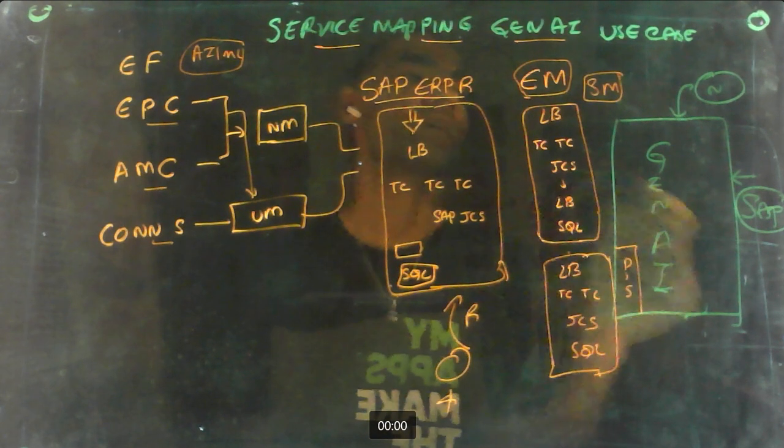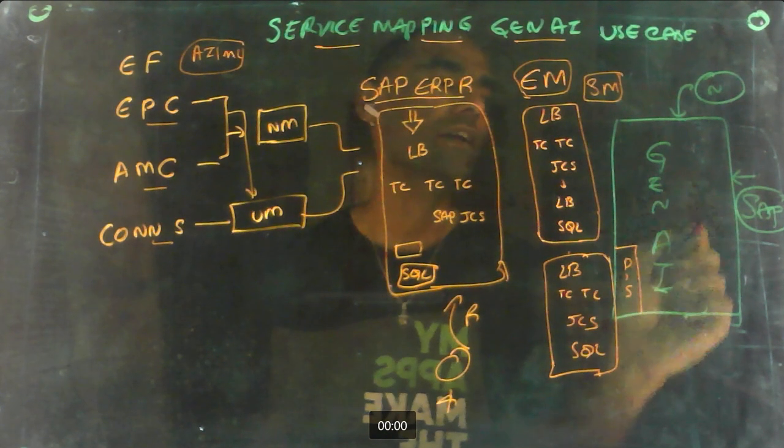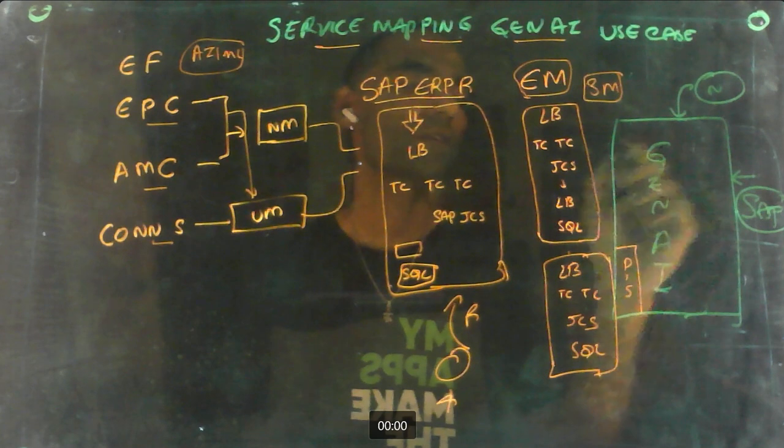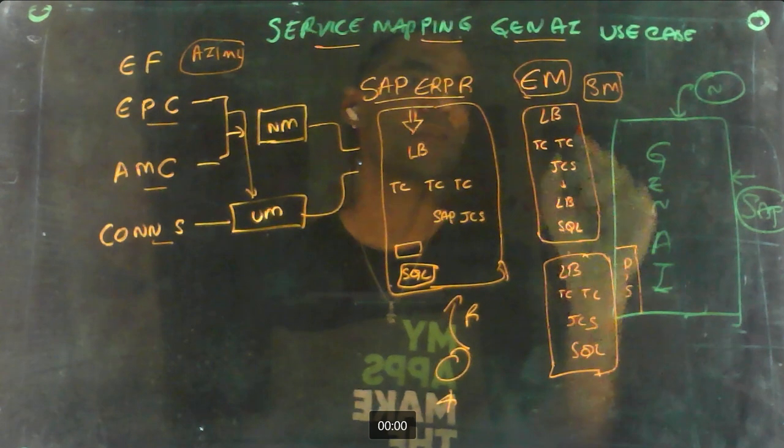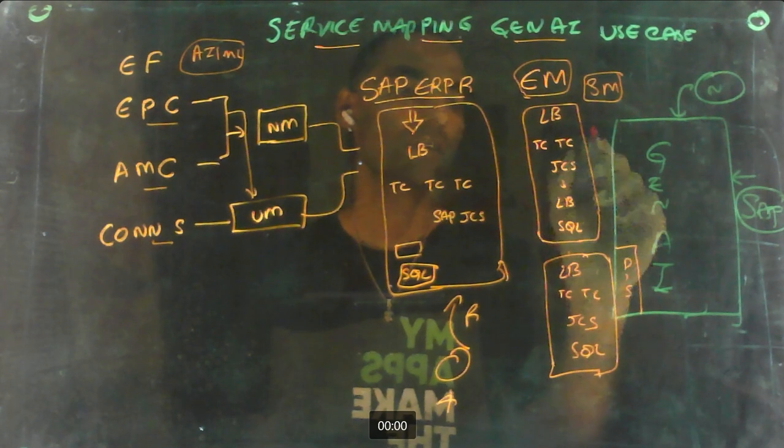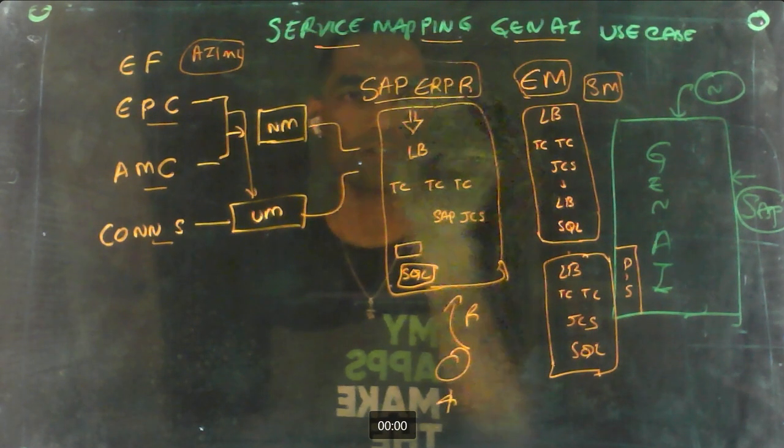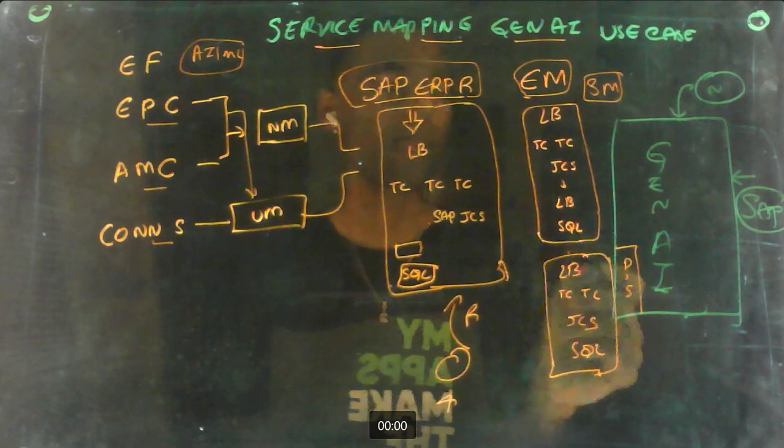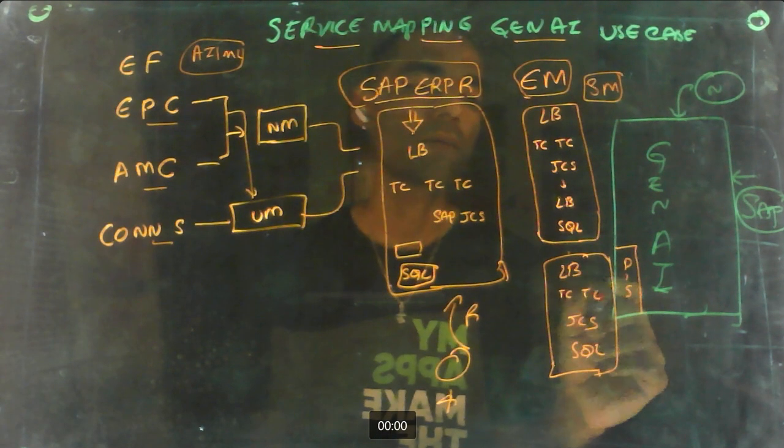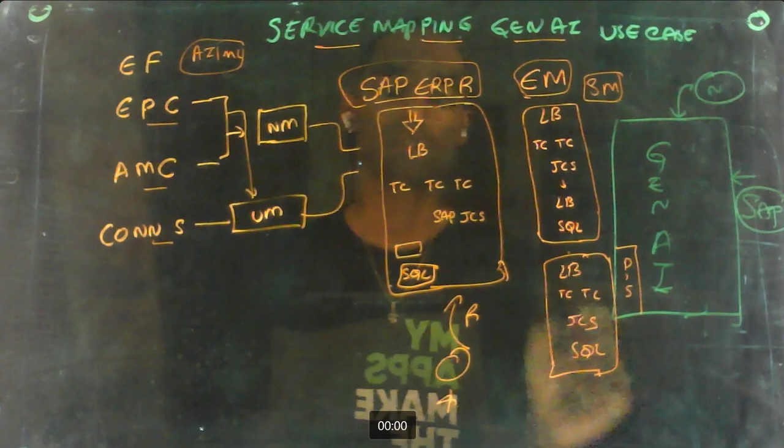But then with the help of Gen AI, so if ServiceNow and SAP together can give you an expected map which can come in two variants: one is a standard map which is applicable to this application of SAP, and then there is a specific map based on what was discovered in the environment.